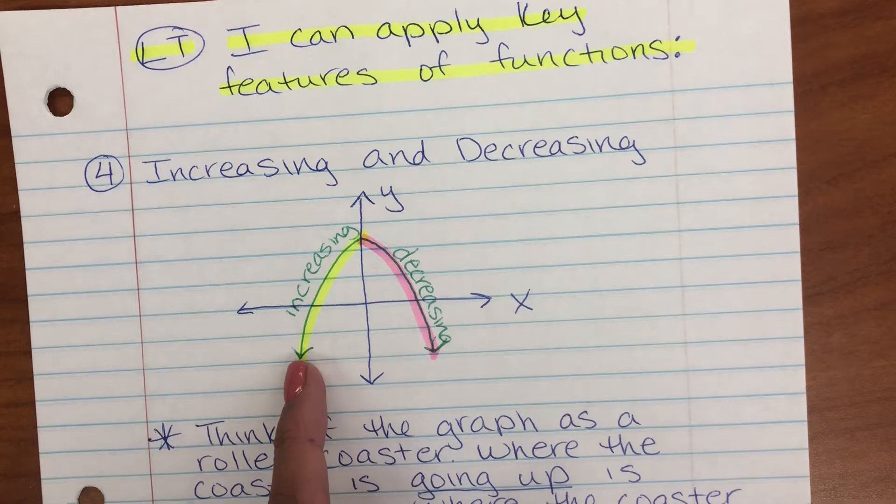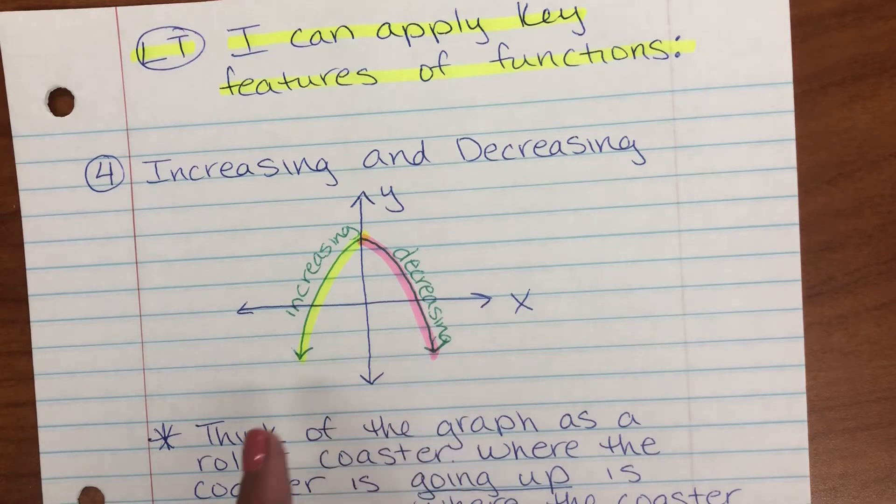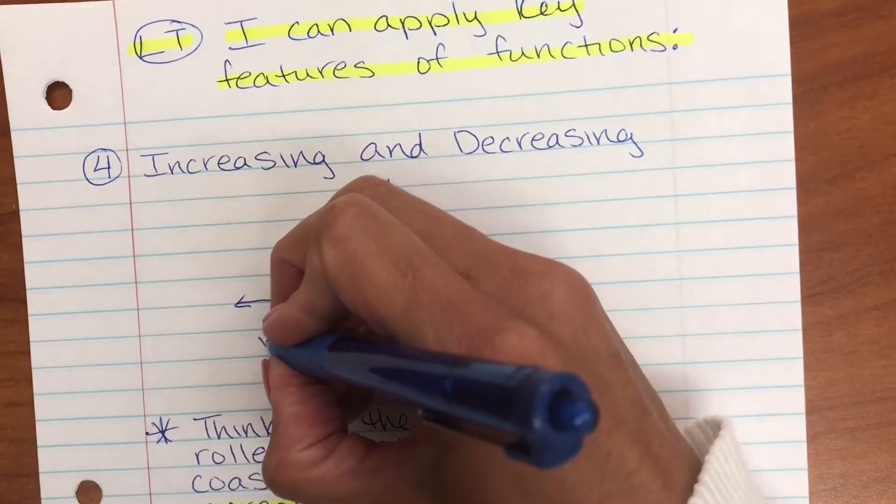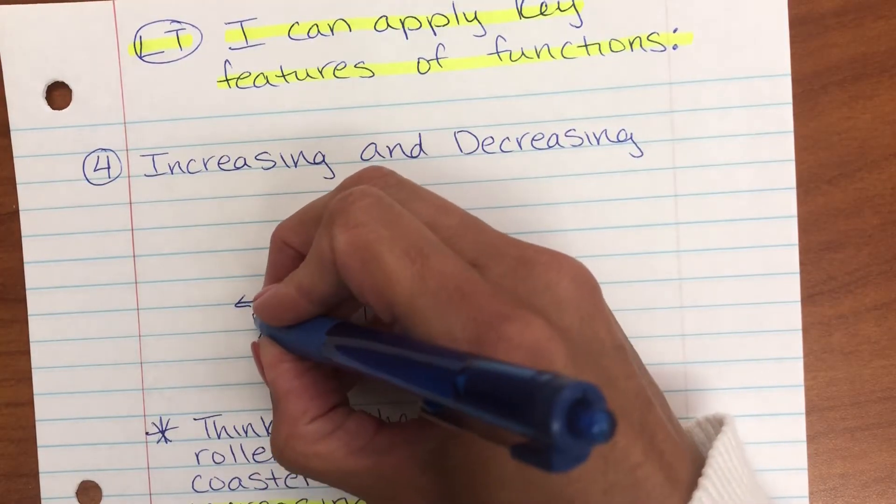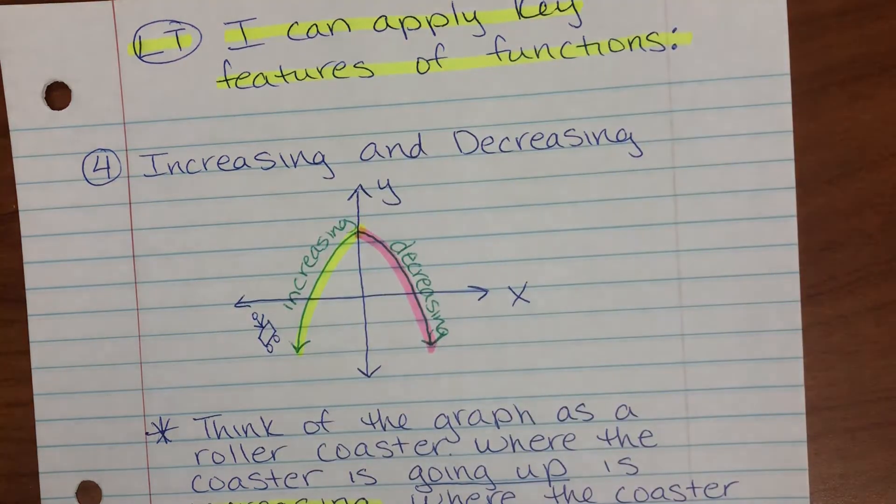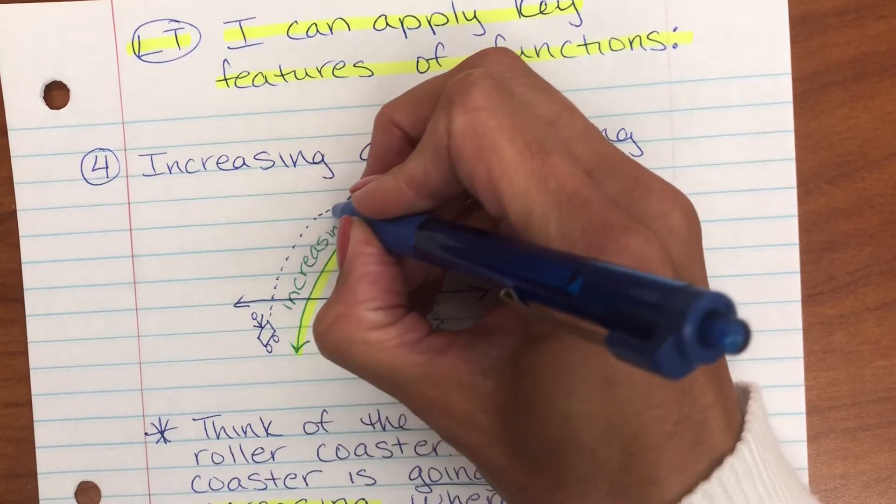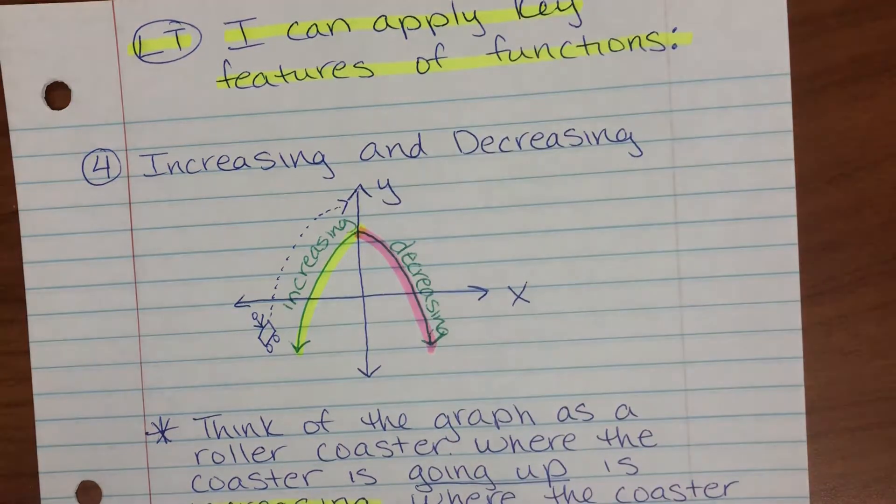Reading the graph from left to right, I want you to think of this graph as a roller coaster. Let's pretend our little roller coaster is going to start his journey here on the left, and as he goes up, that's increasing.